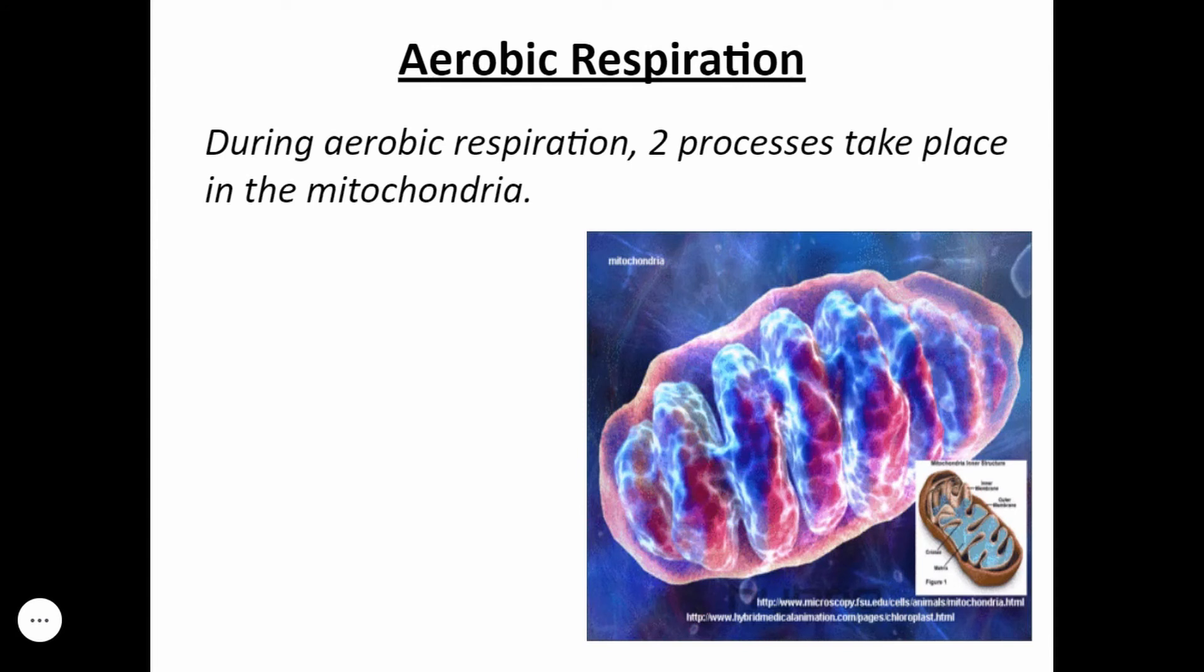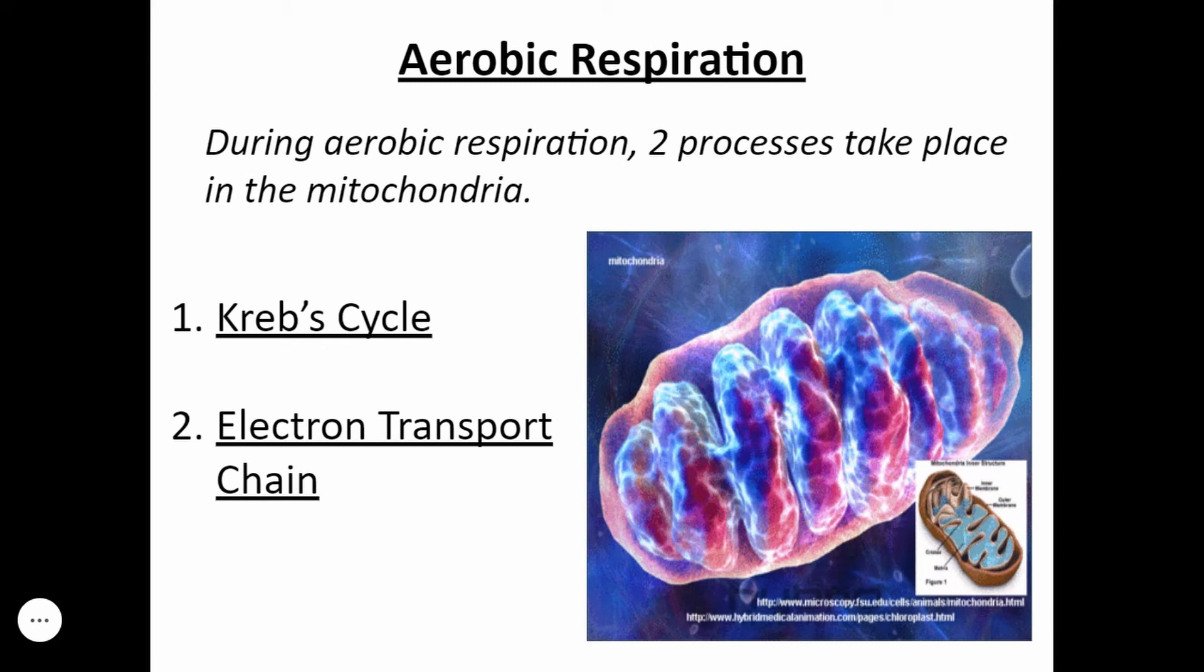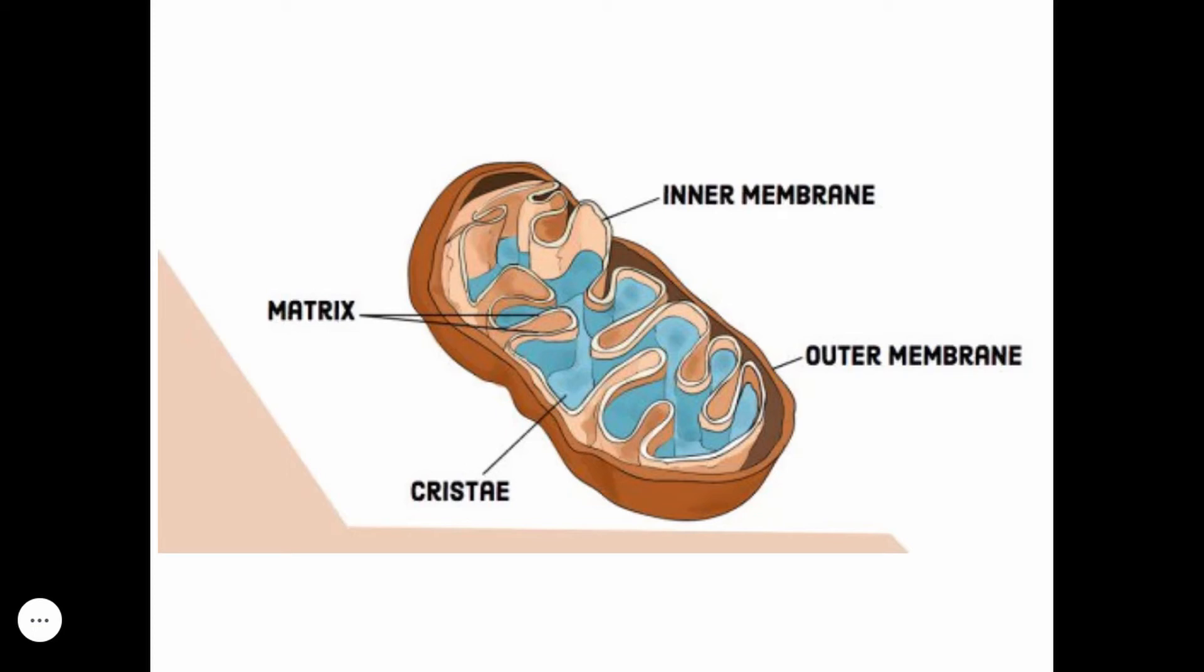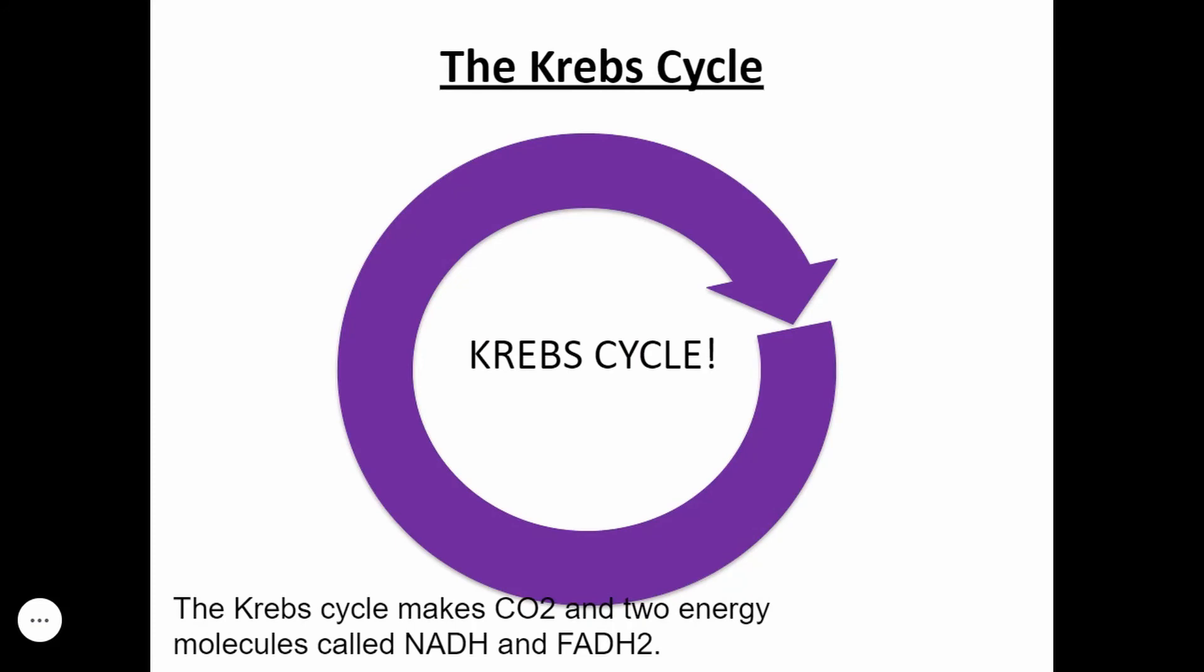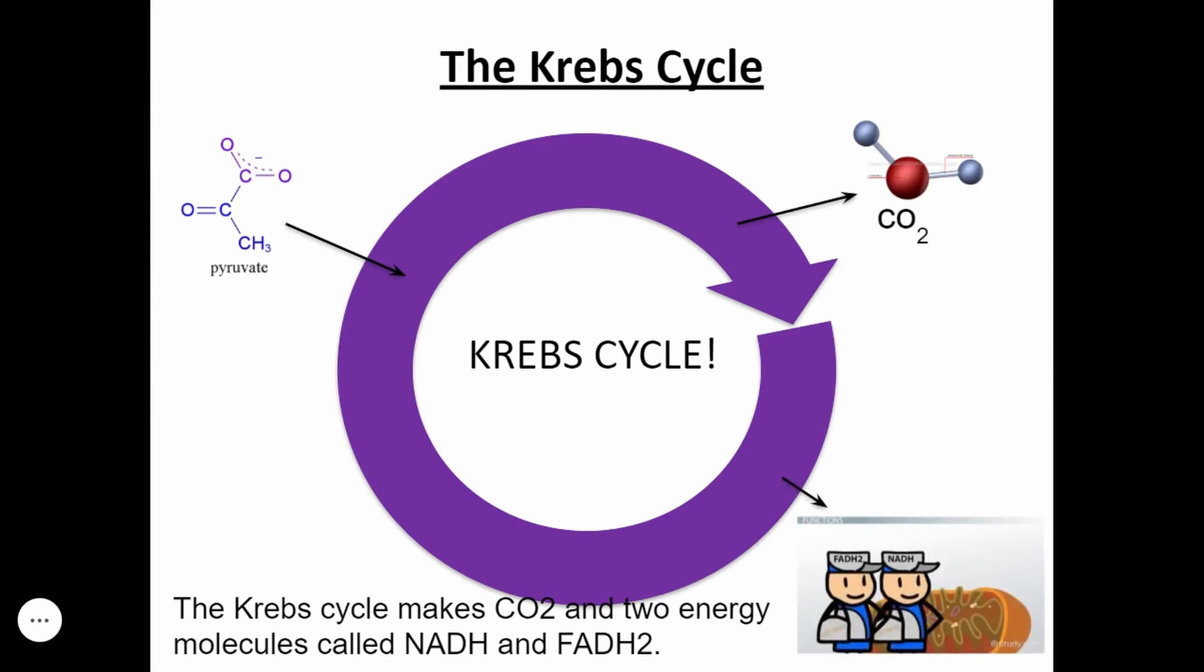During aerobic respiration, there are two processes that take place in the mitochondria. There's Krebs cycle and the electron transport chain, or you might see it written as the ETC. The mitochondria has parts and it does have a matrix, which is kind of the inside part. It's got cristae, which are these folds that are in the mitochondria, and it's got an inner membrane and an outer membrane. When the Krebs cycle takes place, the Krebs cycle is going to make carbon dioxide, and that carbon dioxide is going to be released, but it's also going to make two energy molecules called NADH and FADH2. Pyruvate going into Krebs cycle, and out comes carbon dioxide, NADH and FADH2.